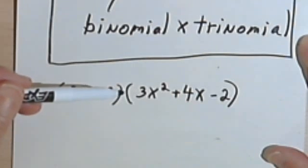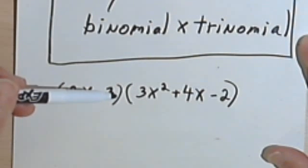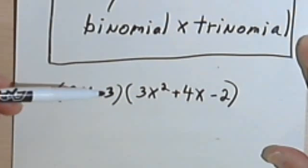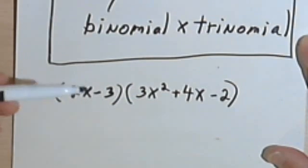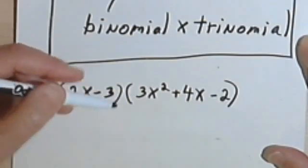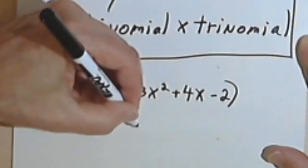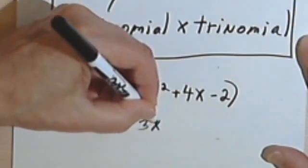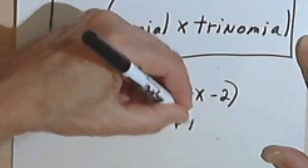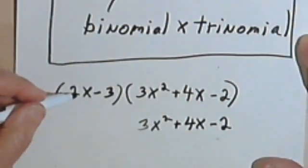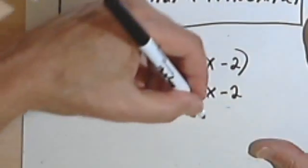We're going to set it up similarly to the way you probably set up multiplication problems back when you were doing just arithmetic multiplication. So I'm going to take the 3x squared plus 4x minus 2, and I'll just write it here: 3x squared plus 4x minus 2. And underneath that I'm going to write 2x minus 3.